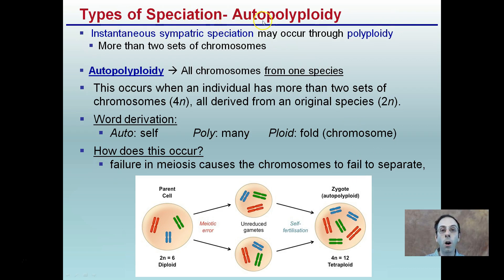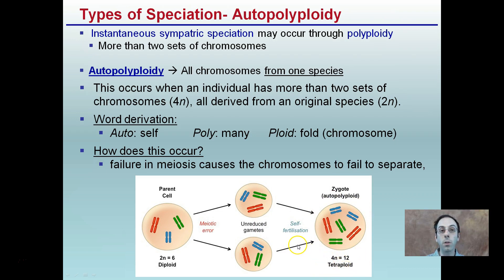Types of speciation include autopolyploidy. Instantaneous sympatric speciation may occur through polyploidy, which is more than two sets of chromosomes. Autopolyploidy is when all chromosomes are from one species — an individual has more than two sets of chromosomes (4n), all derived from the original diploid species (2n). Breaking the word apart: autopolyploid means self-many-folded chromosomes. This occurs when a failure in meiosis causes chromosomes to fail to separate, producing a tetraploid (4n). This isn't always beneficial, but in certain instances — plants in particular — autopolyploidy can occur, and the resulting zygote is tetraploid (4n) instead of the original diploid (2n).